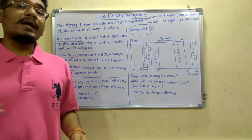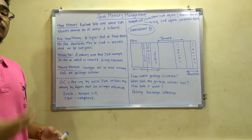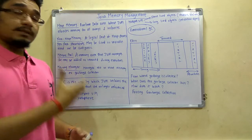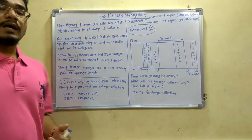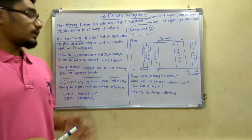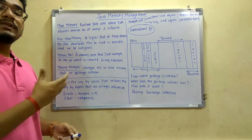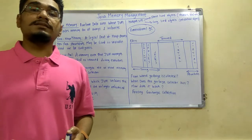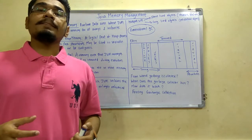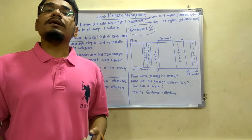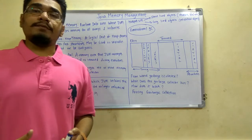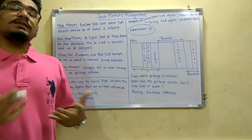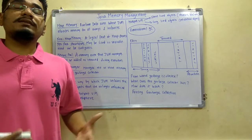Next is the memory manager. A memory manager manages one or more memory pools during execution. For example, the GC — the garbage collector — is a memory manager which manages the memory internally, and this is under the control of the JVM.